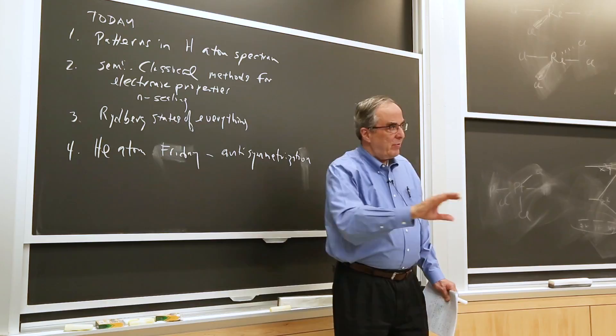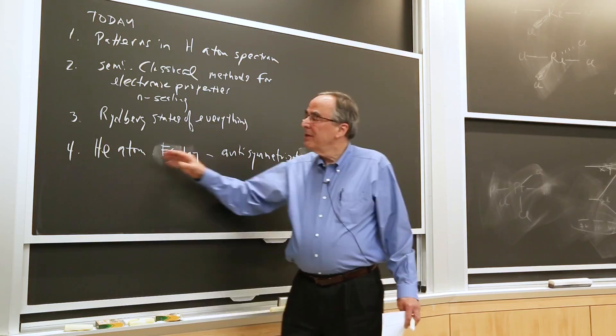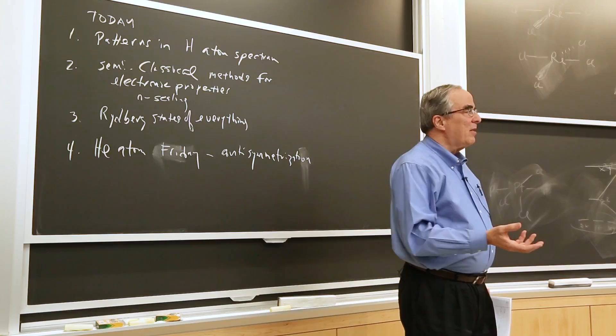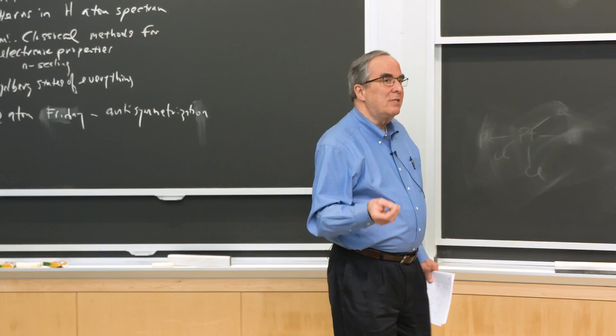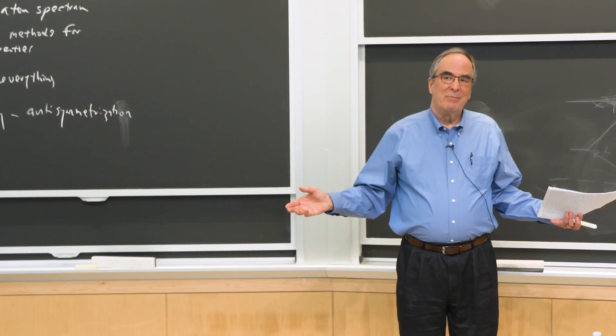Rydberg states are special because one electron is outside all the others. When we have more than one electron, we can still take a simple-minded picture of an electron interacting with something. We can take what we know from hydrogen and describe everything about Rydberg states of molecules. Then comes the bad news: with more than one electron, you have to write anti-symmetric wave functions — anti-symmetric with respect to the exchange of all electrons. That looks like it leads to a tremendous headache, but it doesn't. You do have to learn a new algebra.